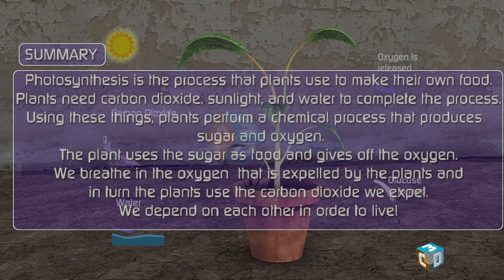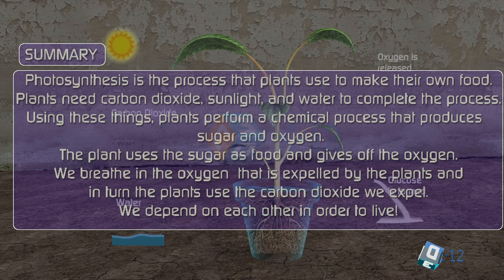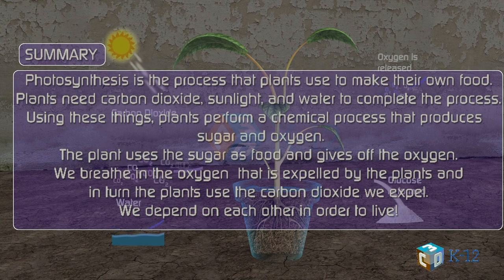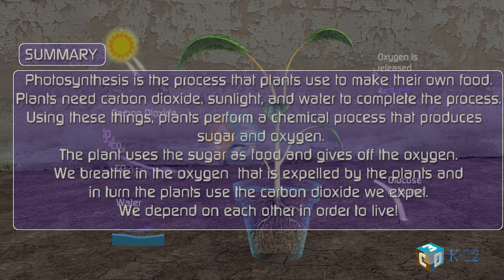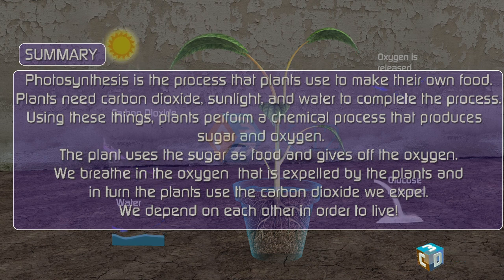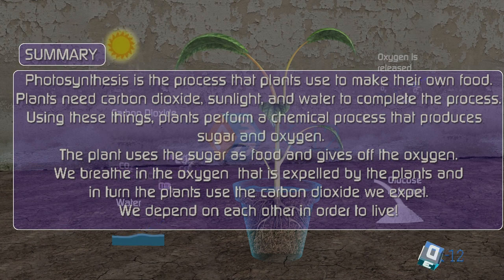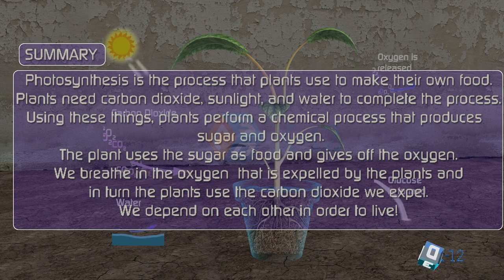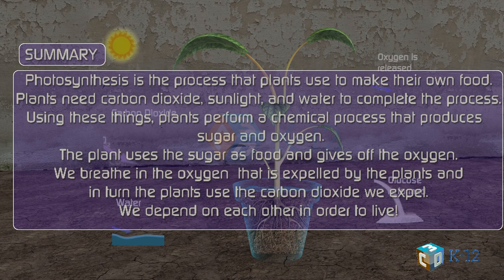In summary, photosynthesis is the process that plants use to make their own food. Plants need carbon dioxide, sunlight, and water to complete the process. Using these, plants perform a chemical process that produces sugar and oxygen. The plant uses the sugar as food and gives off the oxygen we breathe. The plants use the carbon dioxide we expel, and we use the oxygen they expel — neither one would be able to survive without the other.